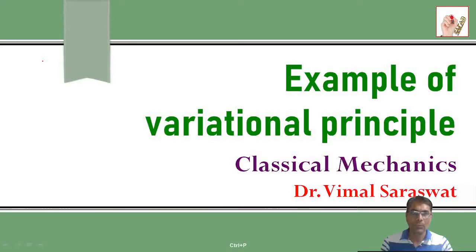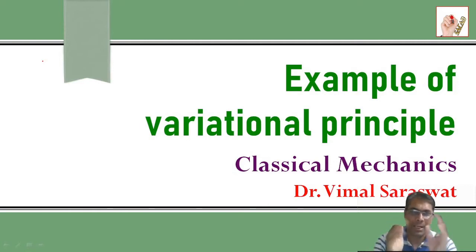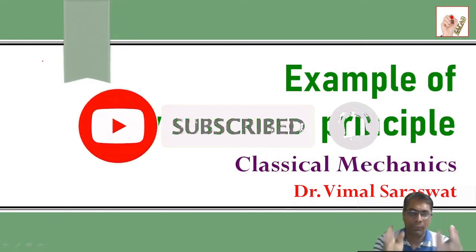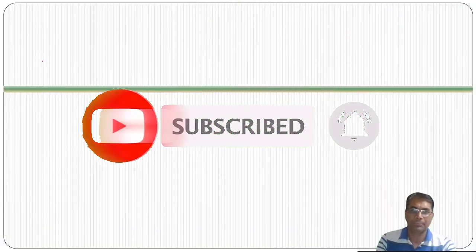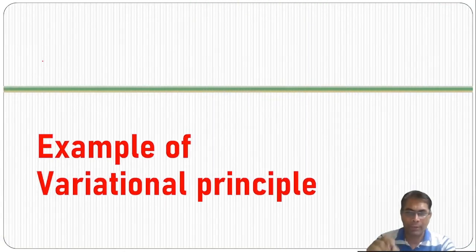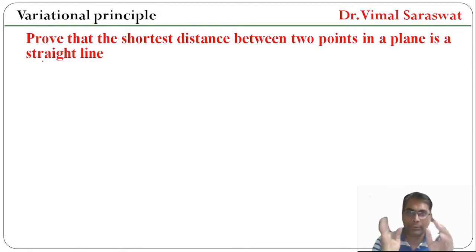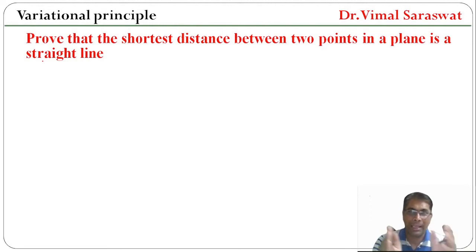Hi friends, welcome back to our YouTube channel. Here we are with another lecture of classical mechanics, in which today we will discuss an example of the variational principle. As an example of the variational principle, we will prove that the shortest distance between two points in a plane is a straight line.